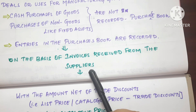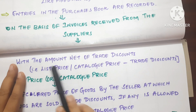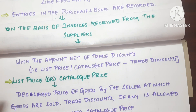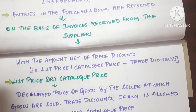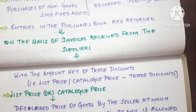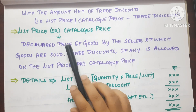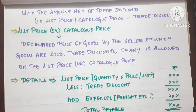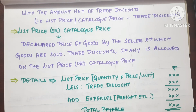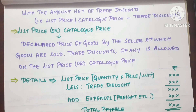Entries in purchase books are recorded on the basis of invoices received from the suppliers. We prepare the purchase book with the amount net of trade discount. So in case there is a trade discount: list price minus trade discount gives the invoice price, and we record the invoice price in the purchase book.